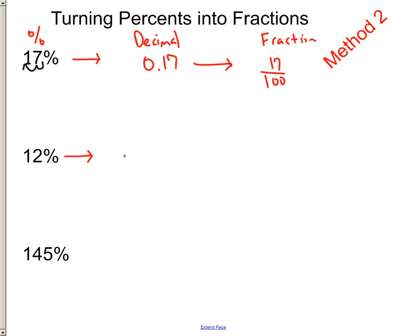So 12% becomes 0.12. 100 goes on the bottom because the two is in the hundredth spot, and 12 goes on top, and then we simplify.